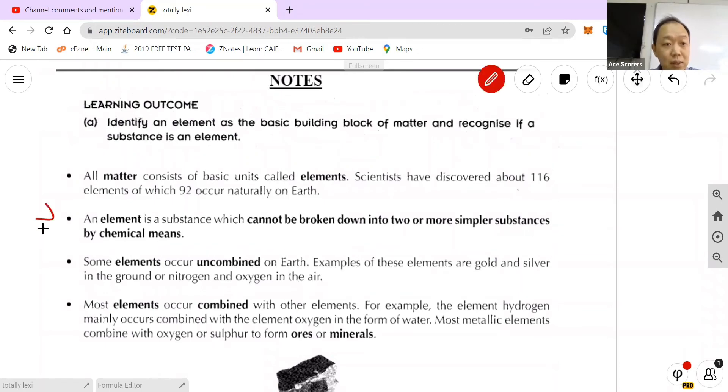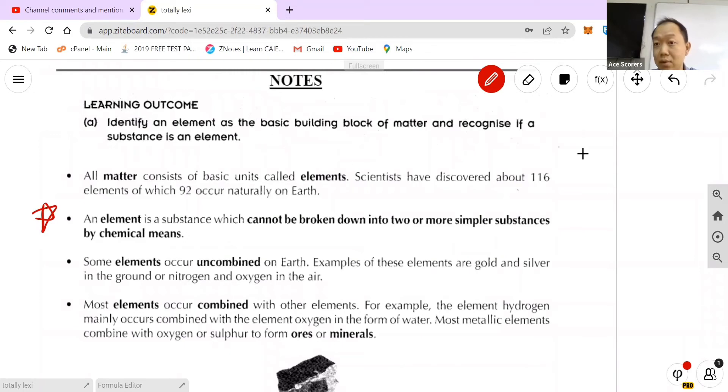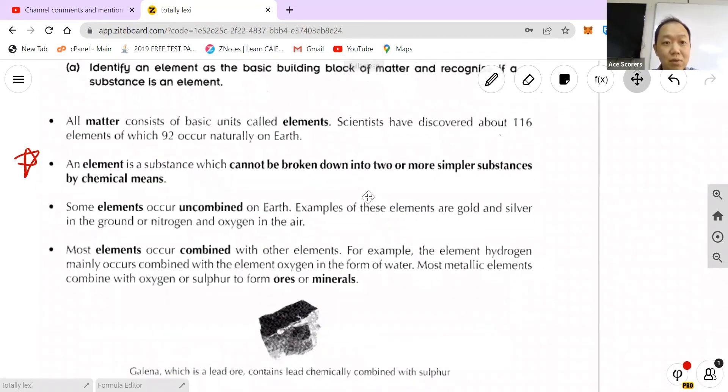So I'm going to just highlight them. You see the first one, what is an element? It is a substance which cannot be broken down into two or more simple substances by chemical means, and of course you need to know the different examples of elements.